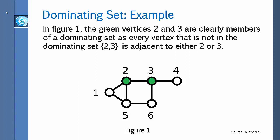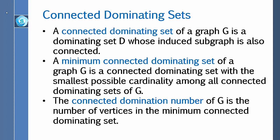Let us look at an example. In figure one, the green vertices 2 and 3 are clearly members of a dominating set, as every vertex not in the dominating set {2, 3} is adjacent to either 2 or 3. For example, vertex 1 is adjacent to vertex 2, and vertex 6 is adjacent to vertex 3, which is a member of the dominating set {2, 3}.